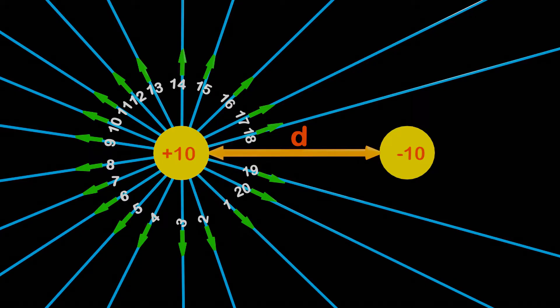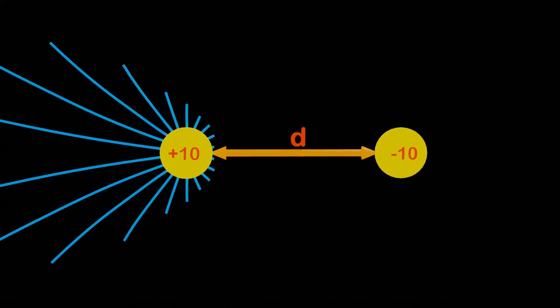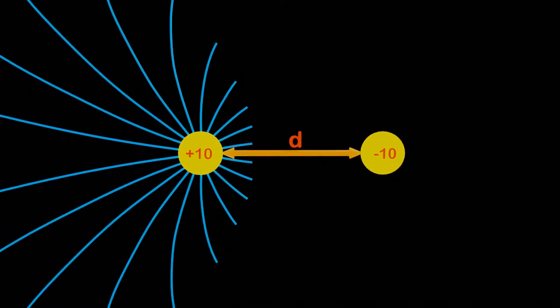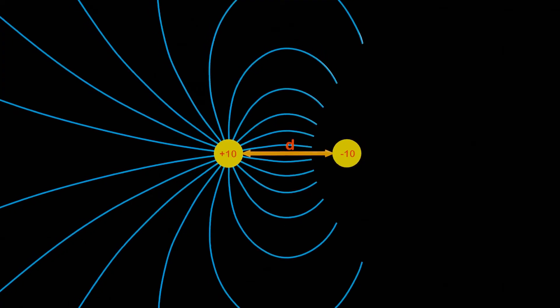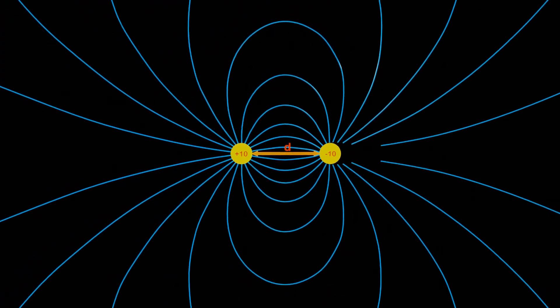Now we know that according to our assumption, 20 electric field lines will originate radially outward from the positive 10 charge. And since the magnitude of the negative charge is also 10, all 20 electric field lines will terminate on the negative charge.